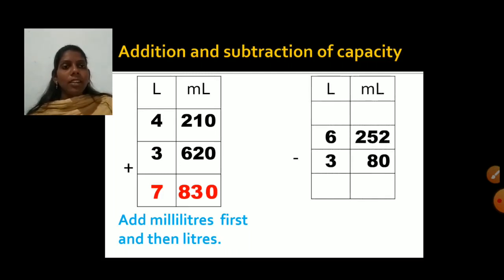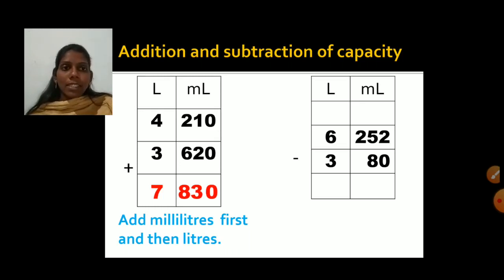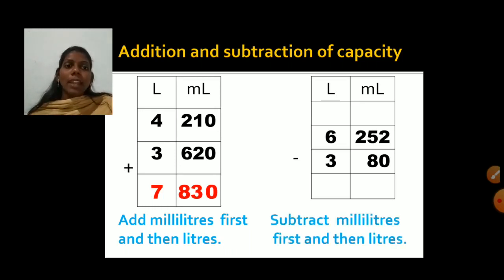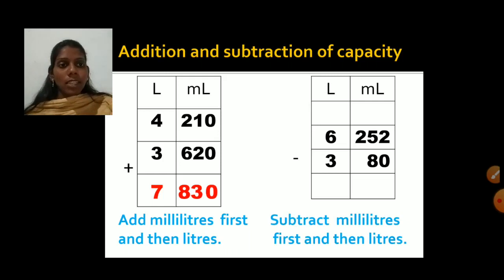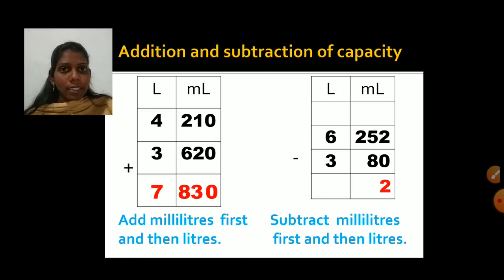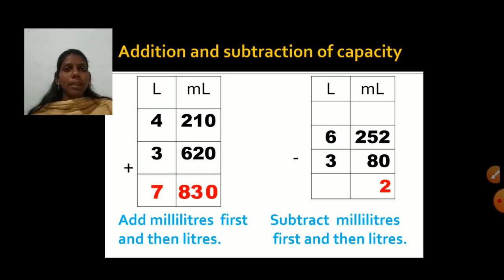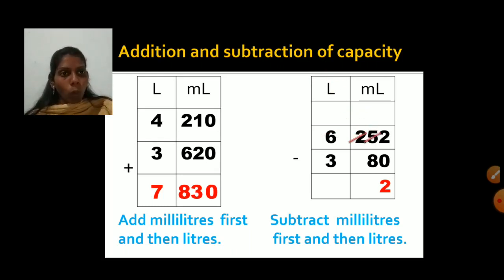Now for subtraction, we will subtract milliliters first and then liters. For milliliters: 2 minus 0 is 2. Now 5 minus 8 — is this possible? No. So we will borrow from the next number. The next number is 2, so we cut 2 and write 1, and instead of 5 we write 15.